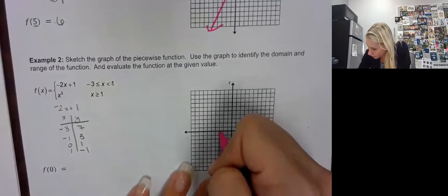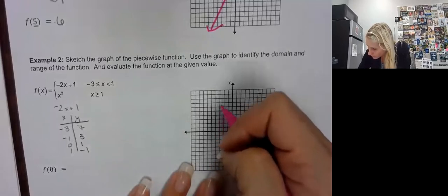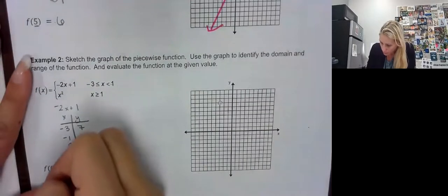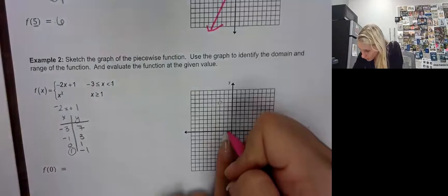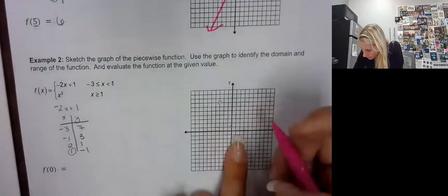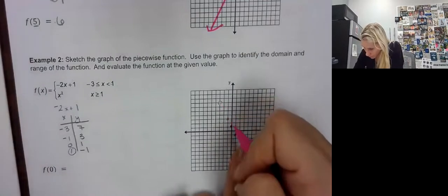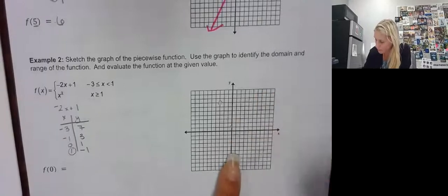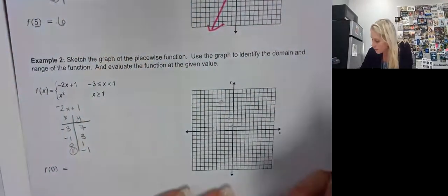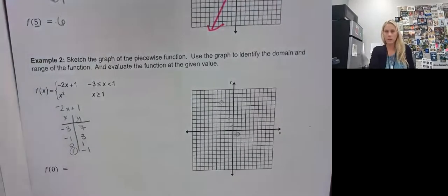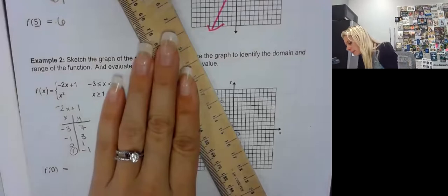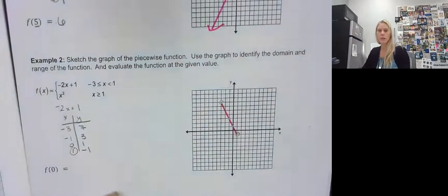So I can graph this. At negative 3 I go to 7 — that's filled in because it's equal to. And the endpoint at 1 is going to be open. At negative 1 we have 3, at 0 we have 1, and at 1 we have negative 1. I erase that negative 1 there because that needs to be an open circle. Remember, I stop at that endpoint — no arrows — and then I go to that open circle.